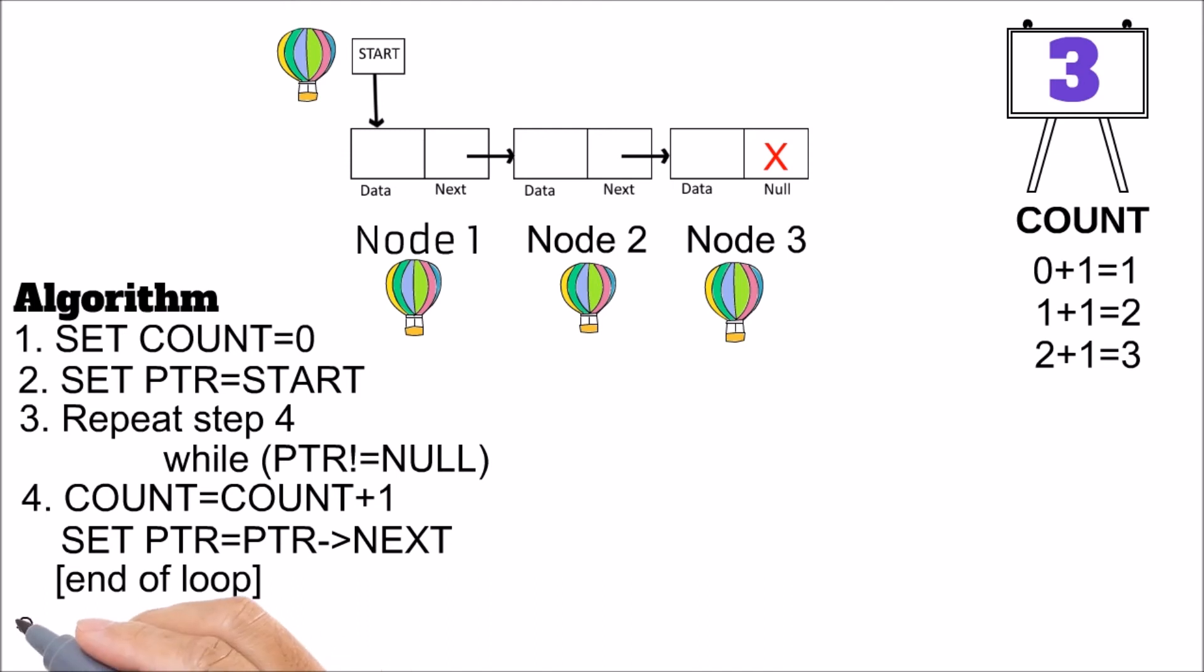So you have to do these steps and then you can print the value of count which has now become 3. And finally, you exit this algorithm.